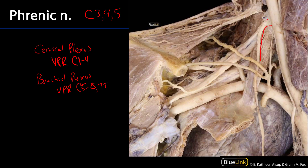Here we can see the phrenic nerve descending down through the root of the neck, just anterior to the anterior scalene muscle, crossing over branches from the thyrocervical trunk — namely the transverse cervical artery and the suprascapular artery. The phrenic nerve then dives deep, passing between the anterior scalene muscle and the subclavian vein as it descends into the thorax.